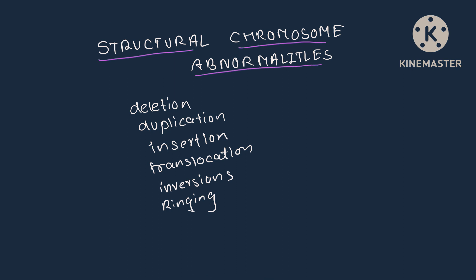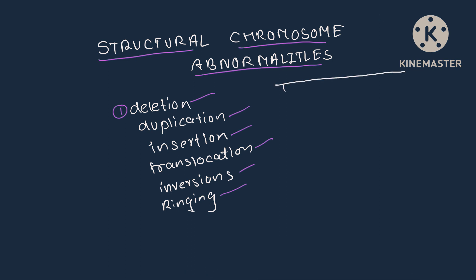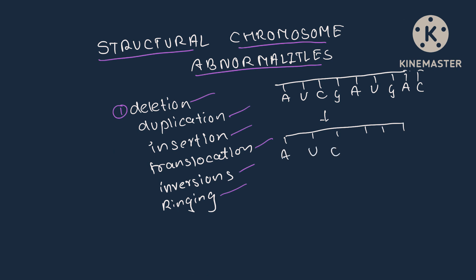Structural chromosomal abnormalities are created due to various effects: deletion, duplication, insertion, translocation, inversion, and ring formation. In deletion, a portion of the DNA strand is removed. For example, from the strand A-U-C-G-A-U-G-A-C, a portion gets deleted.